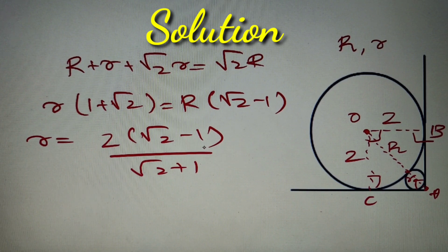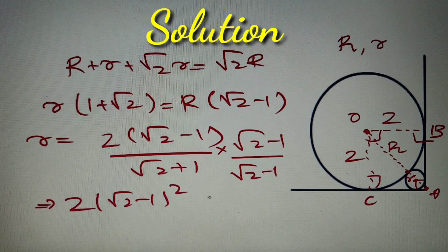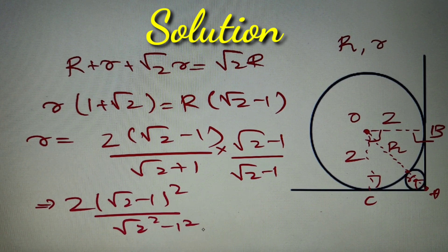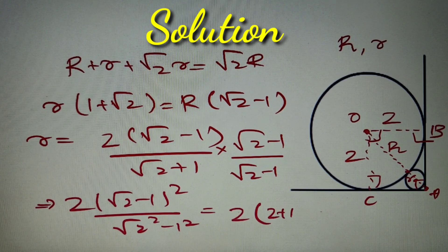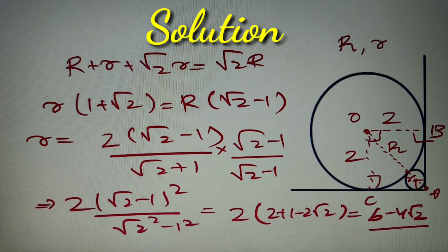To find the exact value, we rationalize the denominator by multiplying numerator and denominator by (root 2 minus 1). This gives 2 times (root 2 minus 1) squared, divided by (root 2 squared minus 1 squared), which equals 2 minus 1 = 1. So the denominator simplifies to 1. Expanding the numerator: 2 times (2 plus 1 minus 2 root 2) gives us 6 minus 4 root 2, which is Option D. The final value of small r is 6 minus 4 root 2.